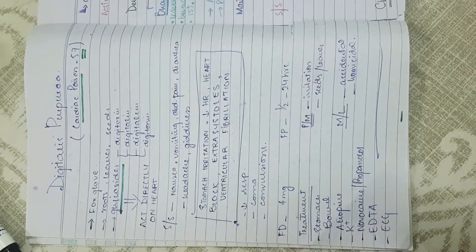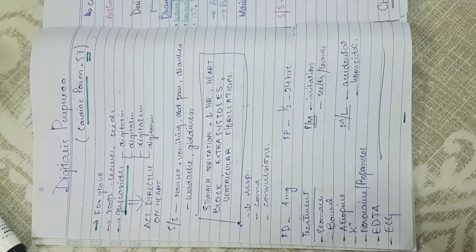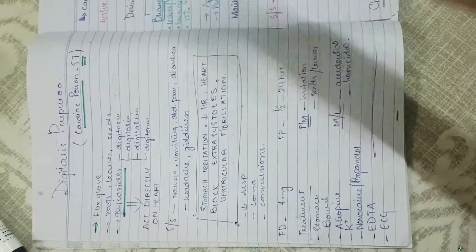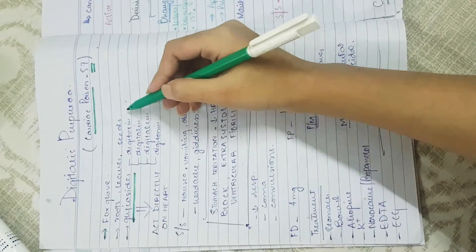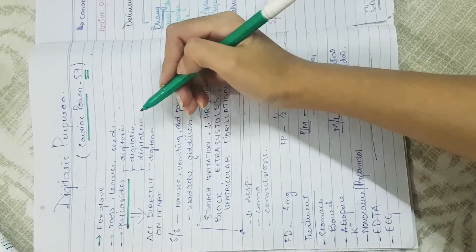The most potent parts are roots, leaves, and seeds. These parts contain glycosides. There are four main glycosides: digitoxin, digitalin, digitalin, and digitalin. These glycosides act directly on the heart.